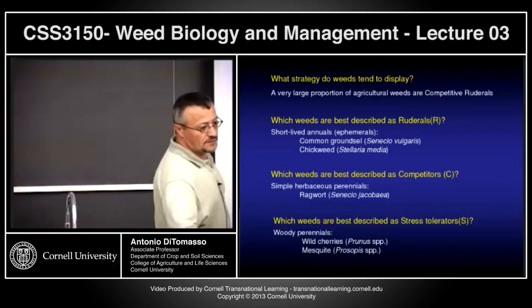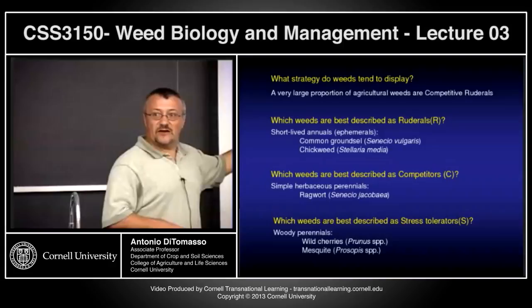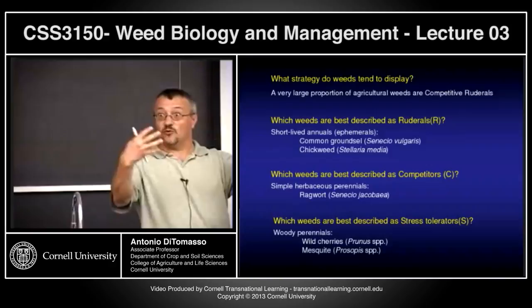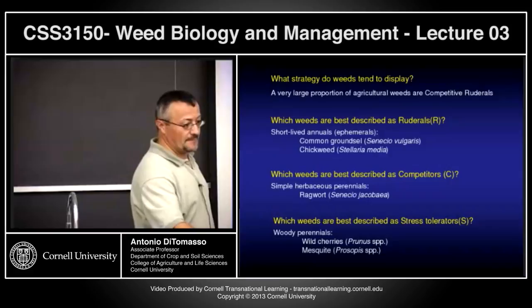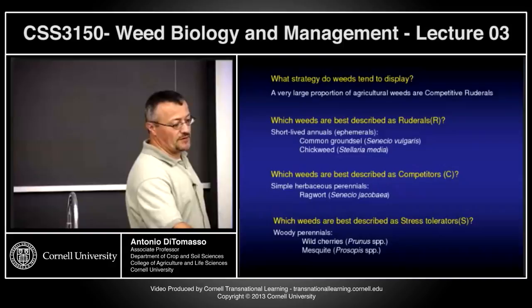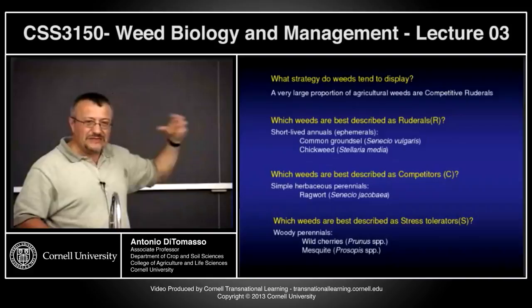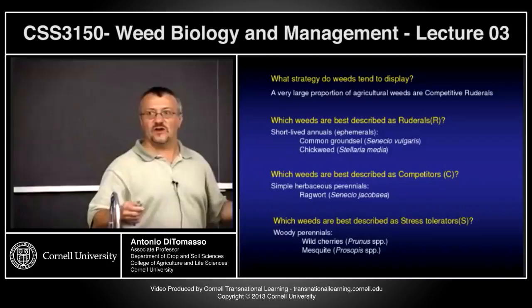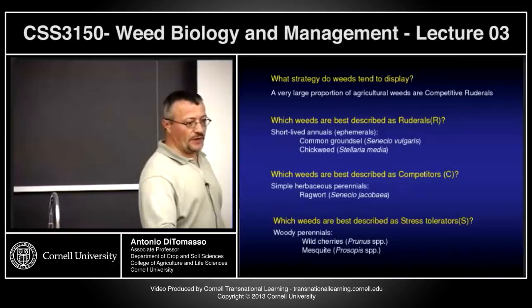A very large portion of agricultural weeds are competitive ruderals — we talked about that. Which weeds are best described as ruderals? Short-lived annuals — very much the R-strategists we discussed. The CSR framework built on R and K selection, expanding it to include three categories. Which are best described as competitors? Simple herbaceous perennials. Stress tolerators are plants in it for the very long term. Understand the concept — if you can give an example, great, but what's most important is your understanding of the general theory.